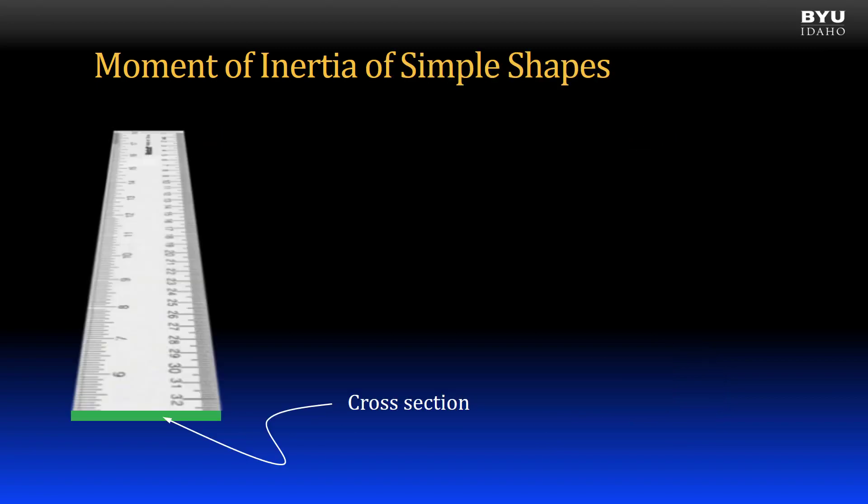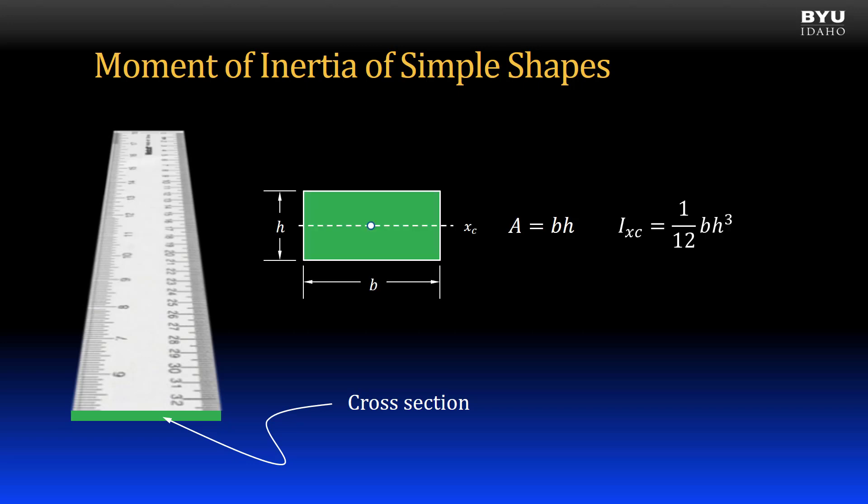If I cut through the ruler, with the cut perpendicular to its length, I see that the ruler has a rectangular cross-section. For simple shapes, like rectangles, you can find equations for calculating the moment of inertia in engineering reference tables. The moment of inertia of a rectangle is 1 divided by 12 times the base dimension times the height dimension cubed. Note the subscripts on I. The x means that this is the moment of inertia about the x-axis shown. The c stands for centroid.